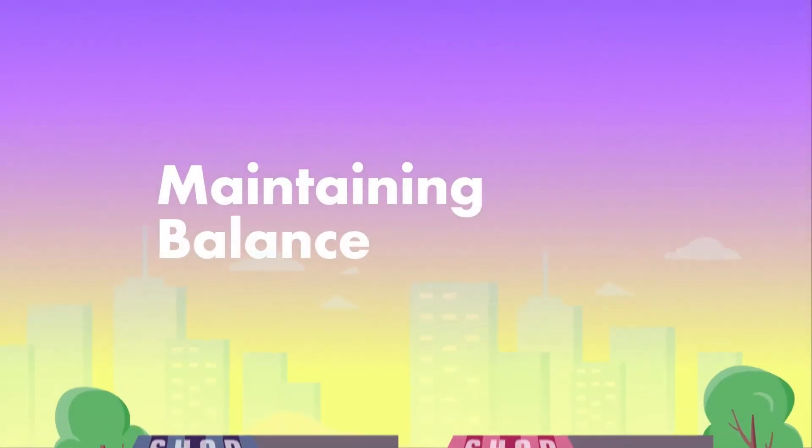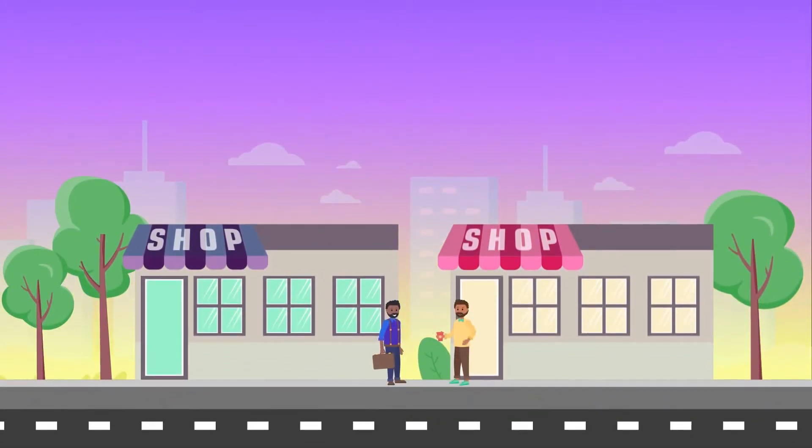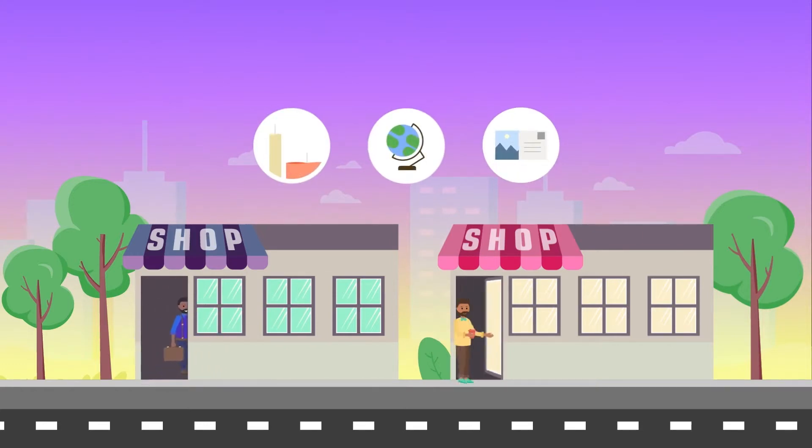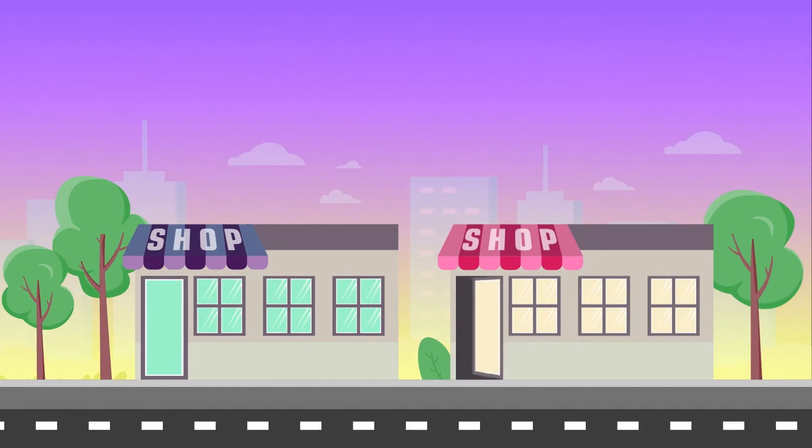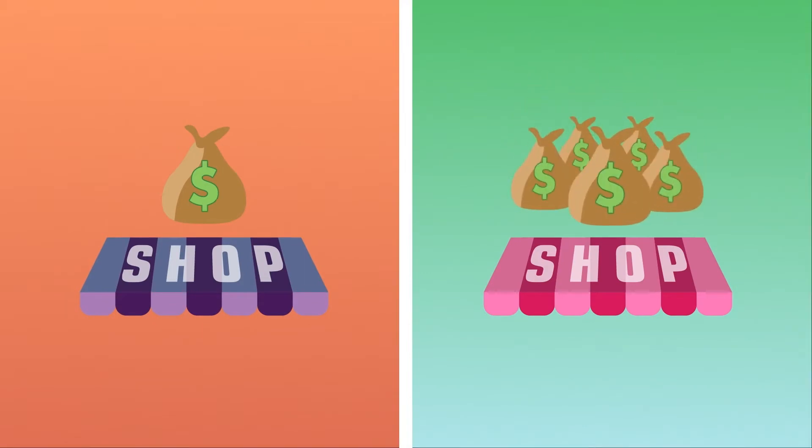In the next town over, on opposite ends of Main Street, are two delightful gift shops owned by two brothers. As siblings can be, they are highly competitive with one another. They stock similar items in their store, but neither's store inventory is all that valuable. Yet despite the similarities between the two, the first gift shop struggles each month to make money while the second flourishes.